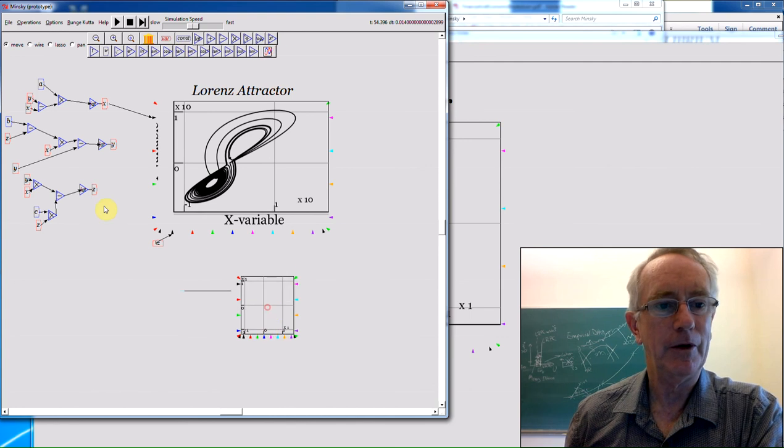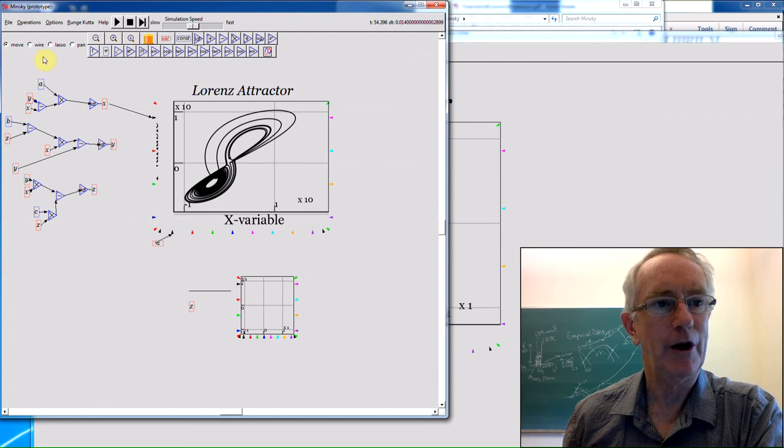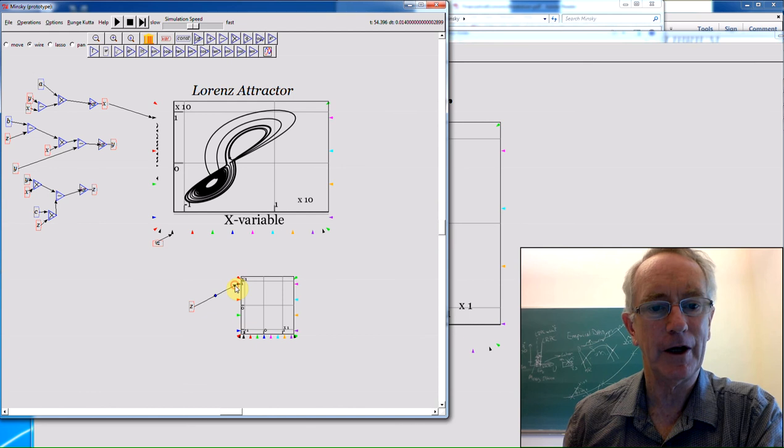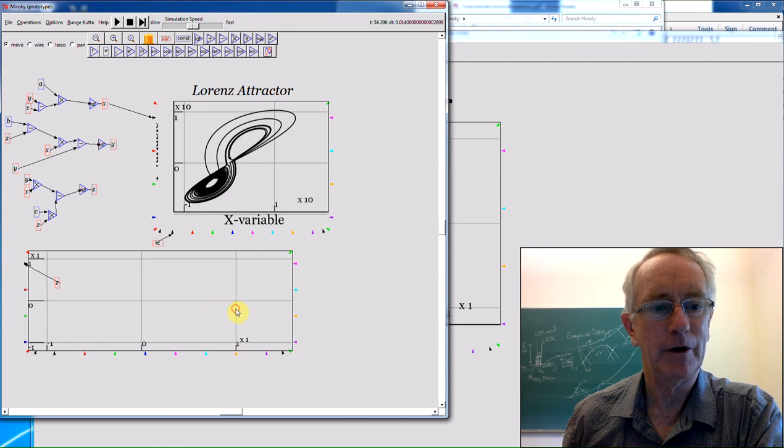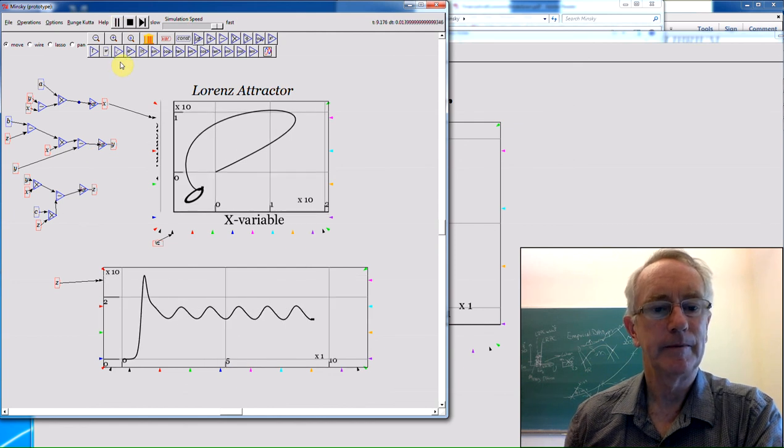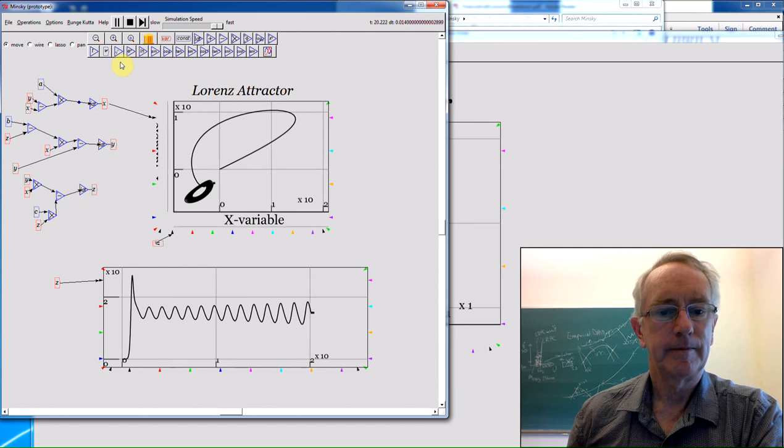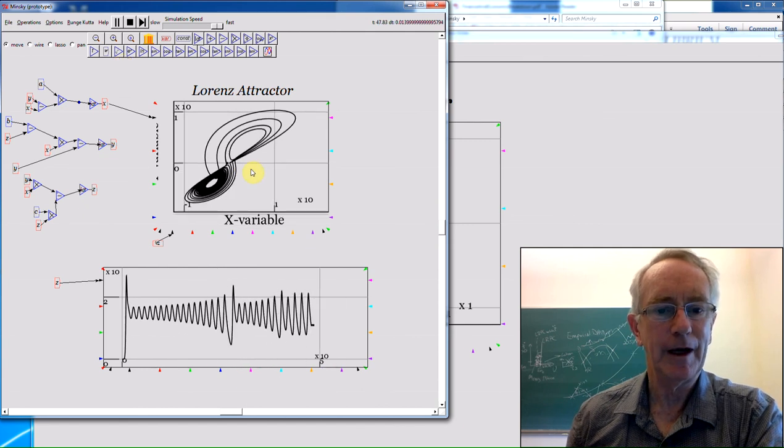This is one of the secrets of nonlinear systems. Well, secrets if you don't do mathematics. And that is that the equilibrium is defined by the linear components of the system. And the closer you... If the linear components are positive and therefore pushing the system away from the equilibrium, then the closer you get to the equilibrium, the bigger those forces are. So you actually get pushed away very dramatically from the equilibrium.